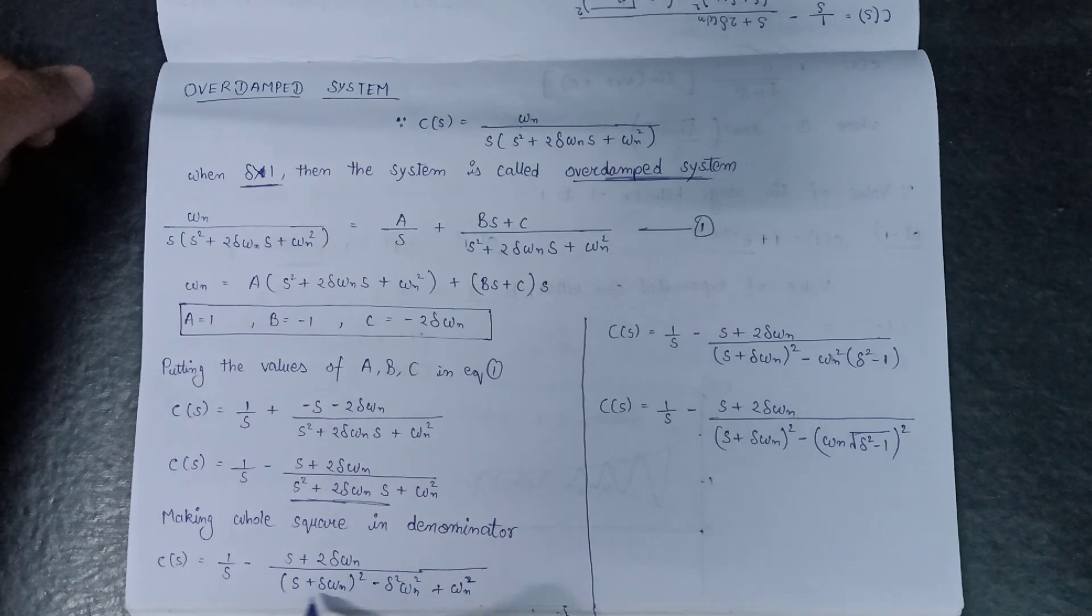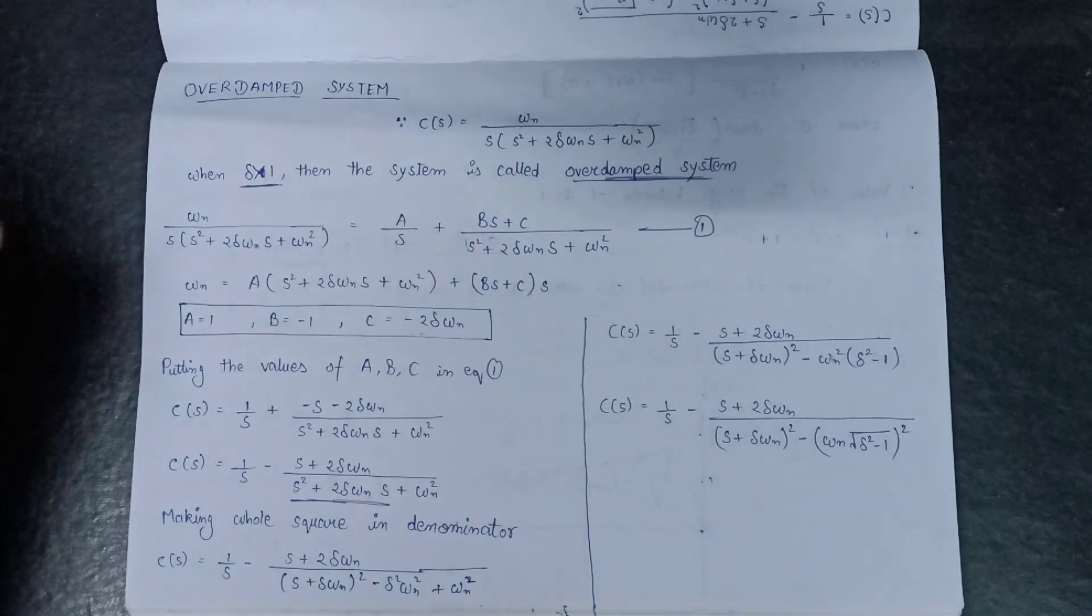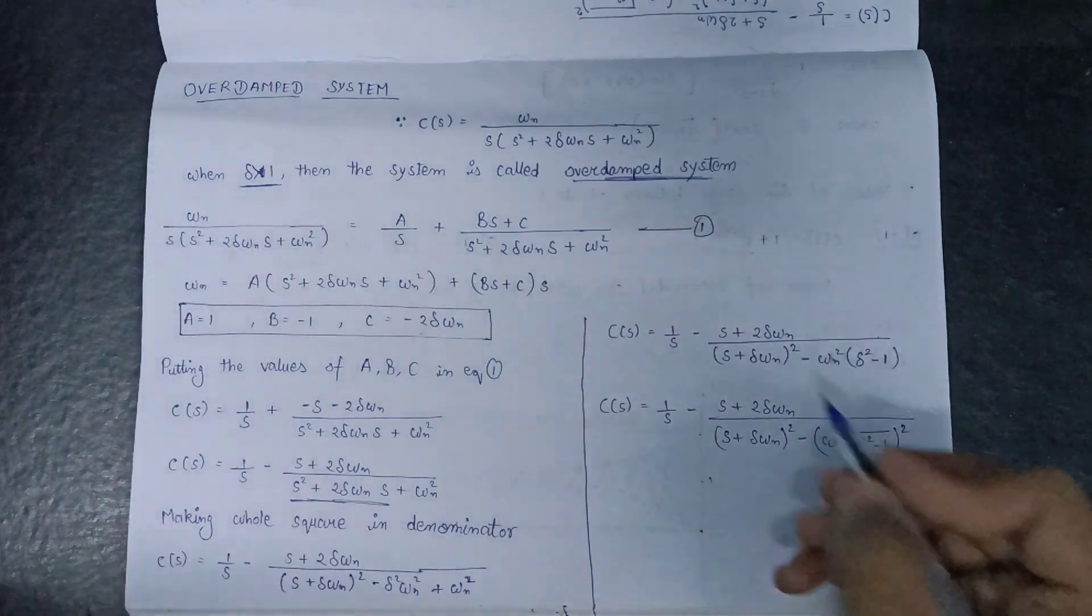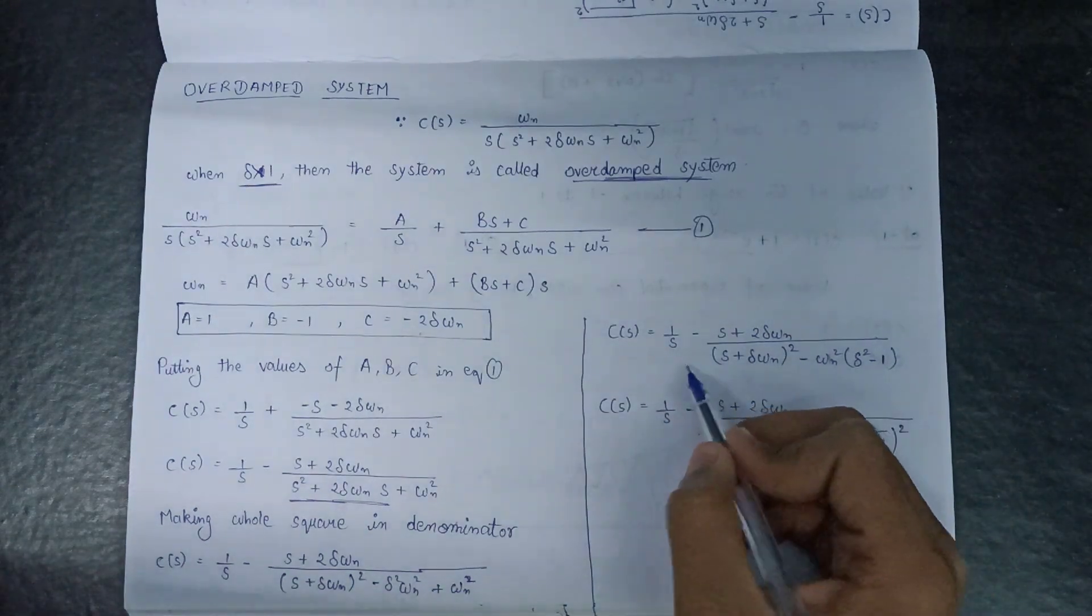2 delta omega_n s plus delta omega_n squared minus delta squared omega_n squared plus omega_n squared. So likewise, after this we have